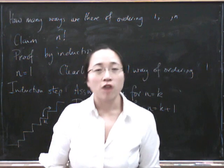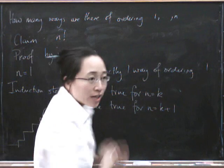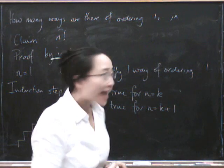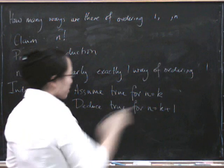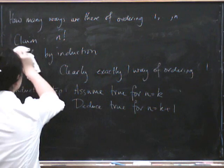Right, let's finish this proof off. We're going to assume that we know how many ways there are of ordering the numbers 1 up to k and prove that we use the same answer for k plus 1.